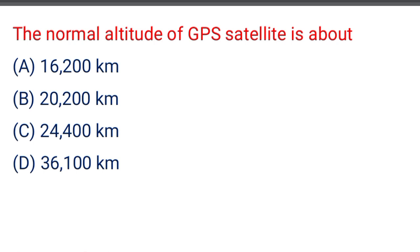Next question: the normal altitude of GPS satellite is — option A: 16,200 km, option B: 20,200 km, option C: 24,400 km, option D: 36,100 km. The correct answer is option B: 20,200 km.